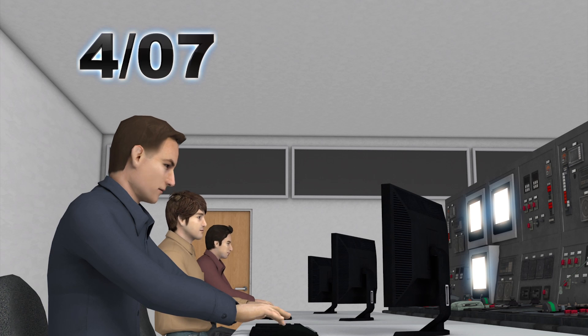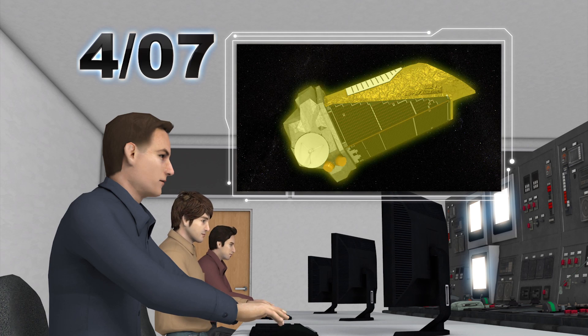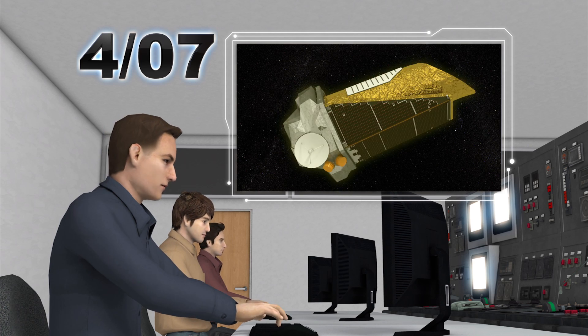During a scheduled check on April 7th, NASA discovered the Kepler space telescope had gone into emergency mode.